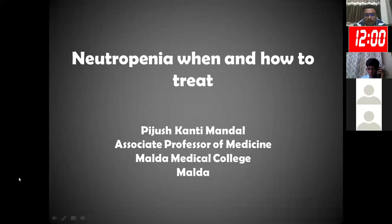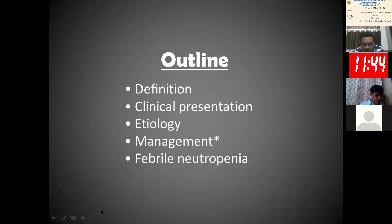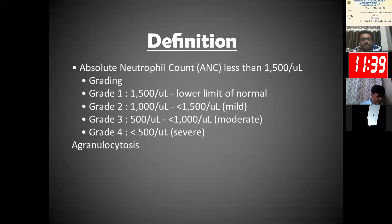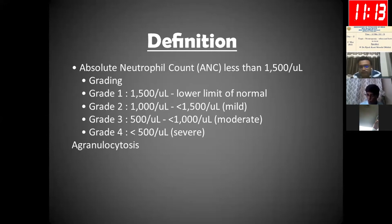By definition, neutropenia is when the absolute neutrophil count (ANC) is less than 1,500 per microliter. It has a grading system: the lower limit of normal ANC is 1,500 — this is grade 1. Less than 1,500 up to 1,000 is grade 2, up to 500 is grade 3, and less than 500 per microliter is grade 4, called severe neutropenia. Agranulocytosis is another term when the ANC is less than 200 per microliter.